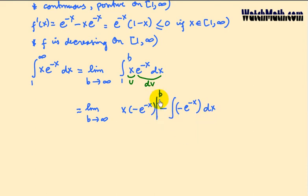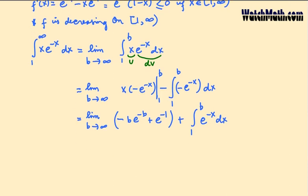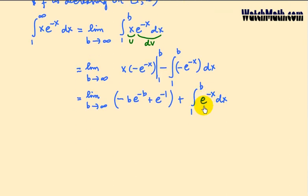We evaluate at b and 1. If we simplify, we have the limit as b goes to infinity of minus be^(-b) plus e^(-1) plus the integral from 1 to b of e^(-x) dx. And the integral of e^(-x) dx will be minus e^(-x).